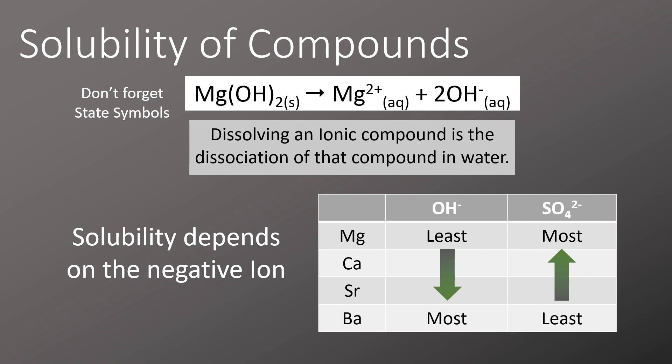The way to remember this is that barium sulfate is the least soluble and forms a white precipitate in water, whereas the others do the opposite. The hydroxides go the opposite way, so if you remember that barium sulfate is the least soluble, then remember that barium hydroxide is the most soluble.